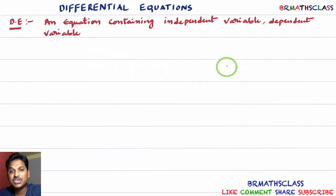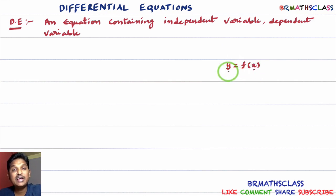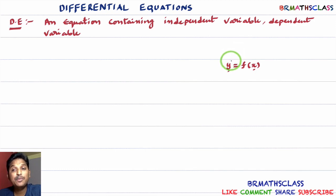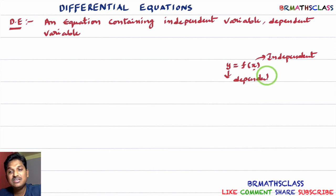Consider a function y equal to f of x. Here, y is a function in terms of x. Which one is the dependent variable and which one is the independent variable? Whatever value of x we take, based on that we will get the y value. So x is independent and y is dependent on x. Therefore, x is the independent variable and y is the dependent variable.